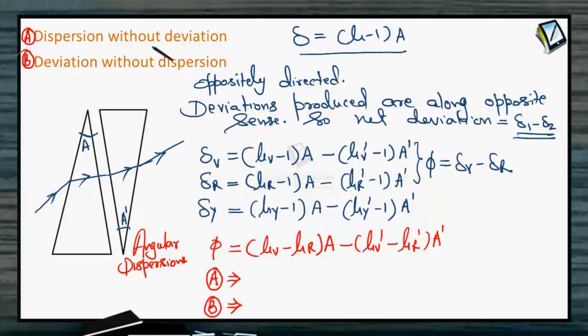Without deviation means we have to nullify the mean deviation. In case A, we will put δ_yellow equal to 0. So it will be the condition for dispersion without deviation, or sometimes it is written as angular dispersion without mean deviation. So δ_yellow is 0.